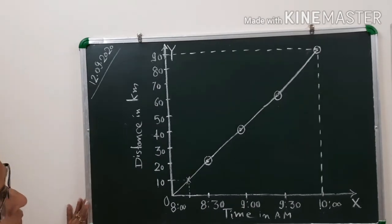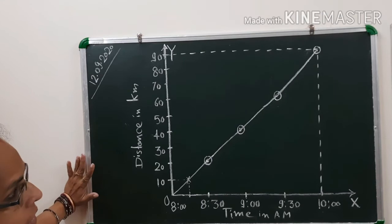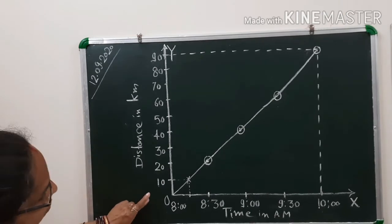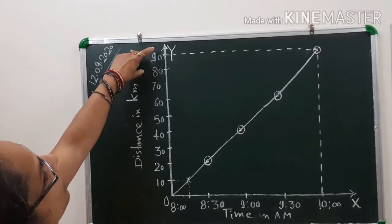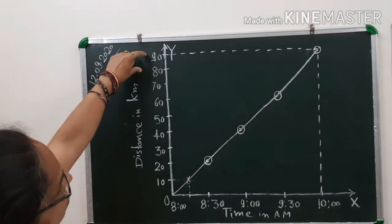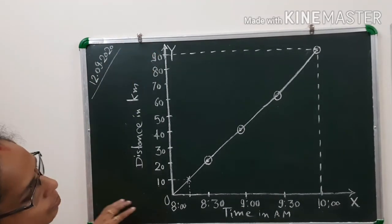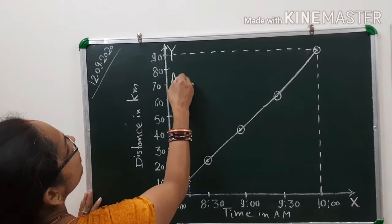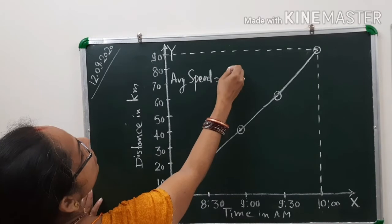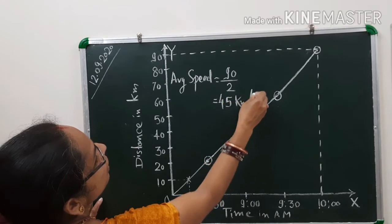The second question is to find the average speed of the bus from the graph. As we discussed earlier, average speed is total distance divided by total time. From the graph, the total distance covered is 90 km — when we draw from the last point of the graph a parallel line to the x-axis, it reads 90 km. The total time is 8 a.m. to 10 a.m., which is 2 hours. So average speed equals 90 divided by 2, which is 45 km per hour.